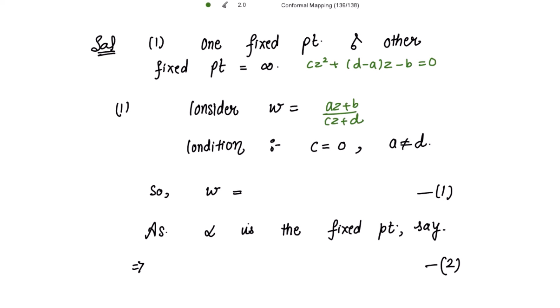Putting C = 0 into the bilinear transformation gives w = (a/d)z + b/d. Mark this as equation 1. Now, since alpha is a fixed point, w = z = alpha. Substituting alpha for both w and z gives alpha = (a/d)·alpha + b/d. Mark this as equation 2.